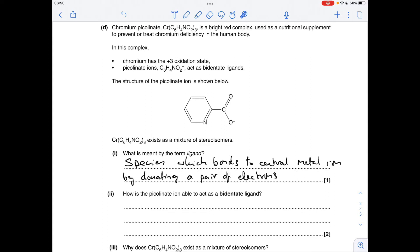How is this ion able to act as a bidentate ligand? Well, it must be able to donate two pairs of electrons. How is it able to do that? Well, it can donate a pair of electrons from that O⁻ and from the nitrogen, so the lone pair on both.